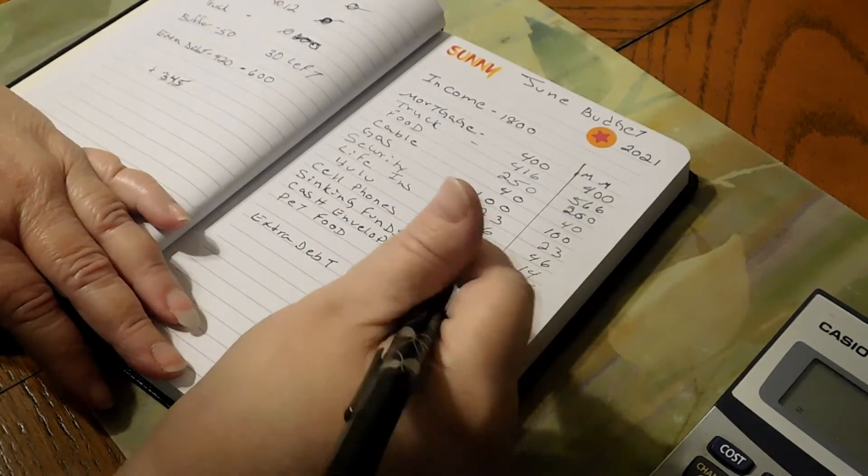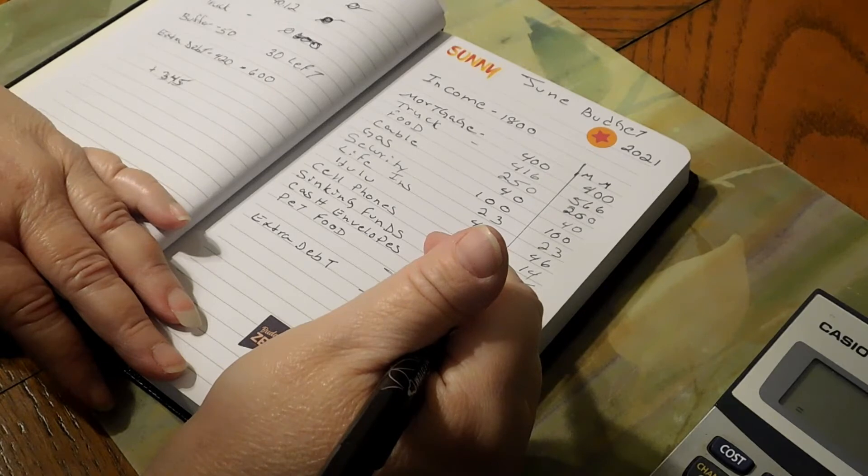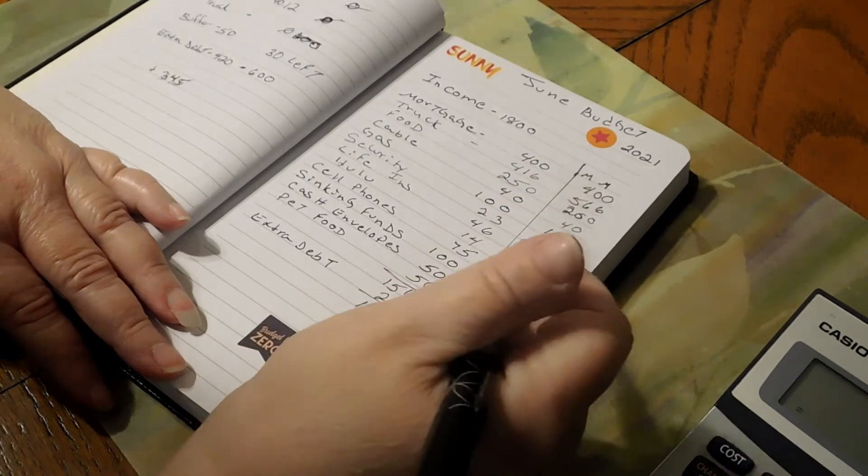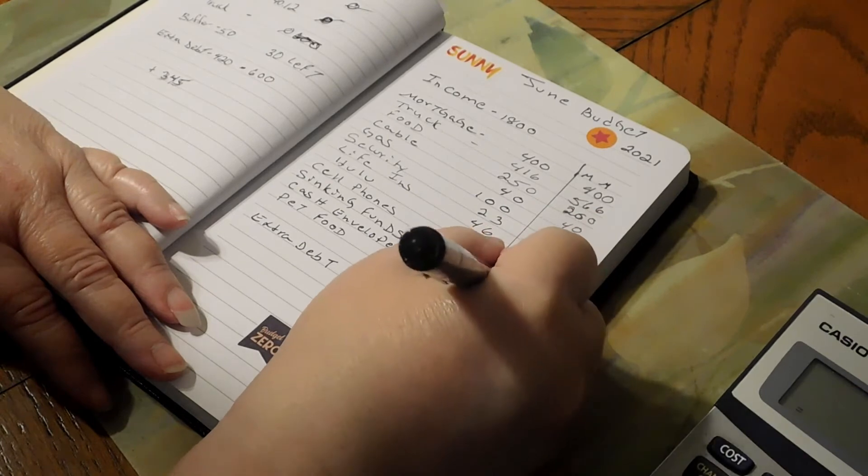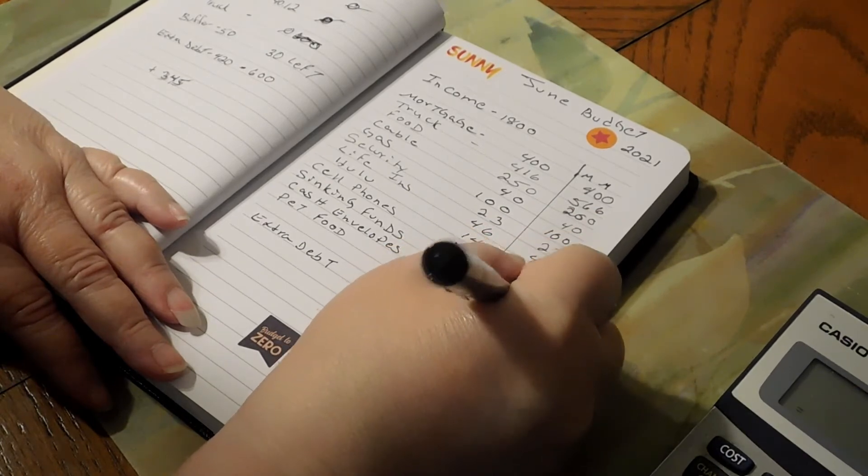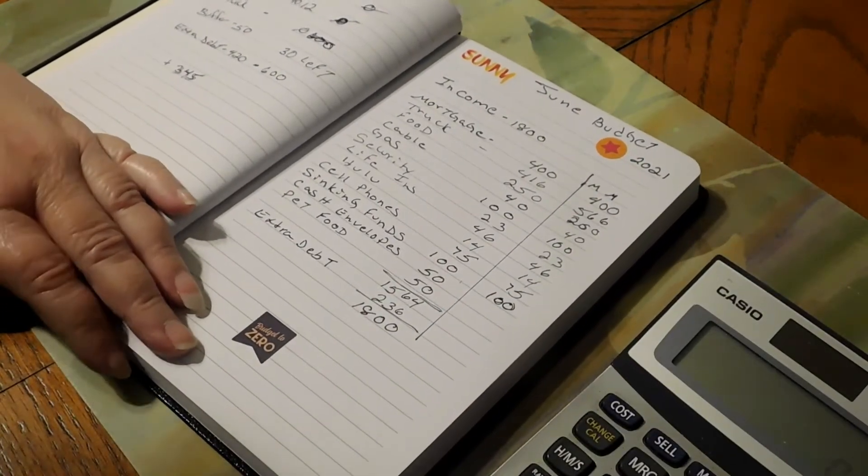Sinking funds, we do $100 out of his paycheck. So we did that. We did the $100.